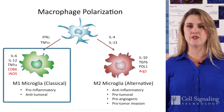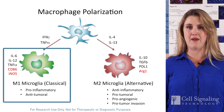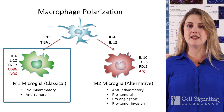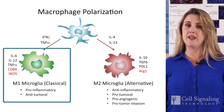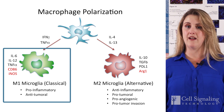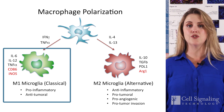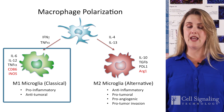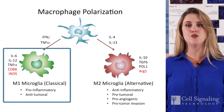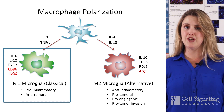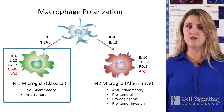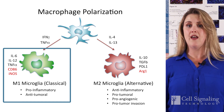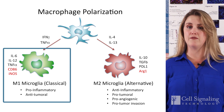M1-polarized macrophages, referred to as classically activated macrophages, are activated by cytokines such as interferon gamma, and they produce pro-inflammatory and immunostimulatory cytokines such as interleukin-12 and -23. Scientists have demonstrated M1 macrophages can have antitumoral properties by scavenging and destroying phagocytosed tumor cells and stimulating helper T cell type 1 responses.